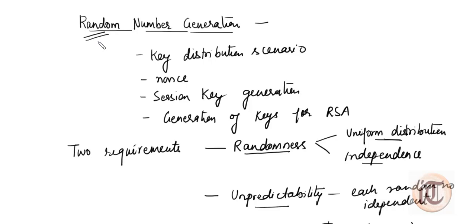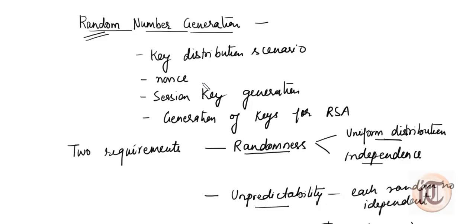Hello friends. In this video we are going to discuss the next algorithm which is used to generate pseudo random numbers. As we discussed in my previous video, random numbers are used in key distribution scenarios and for non-session key generation for RSA. These are the areas in which we use random numbers.